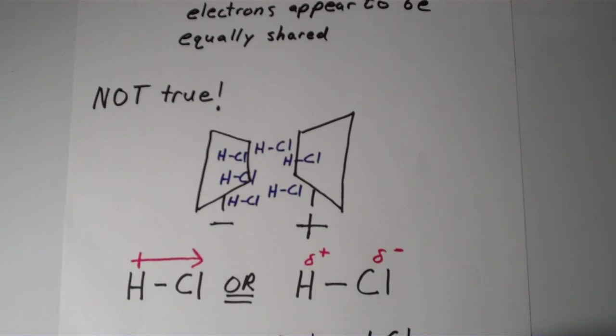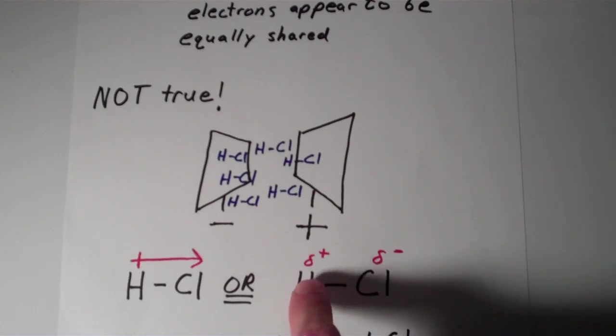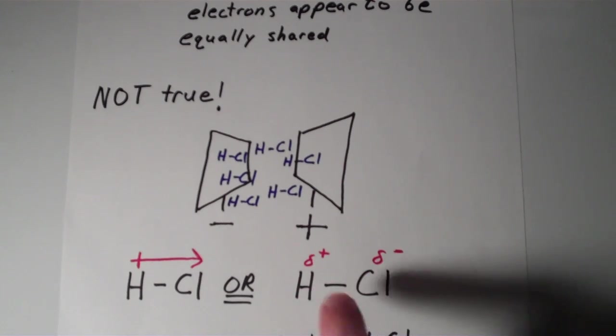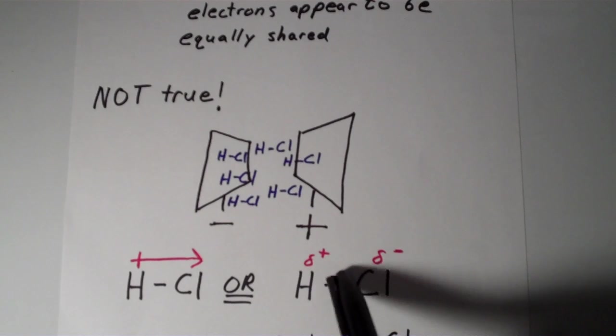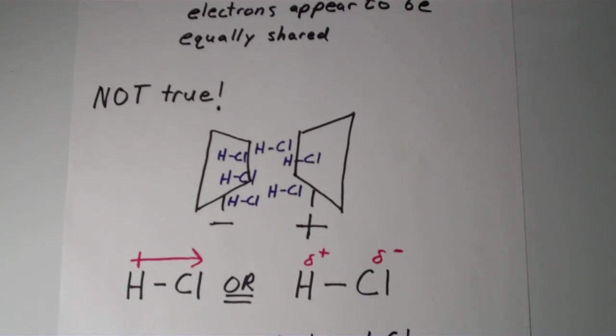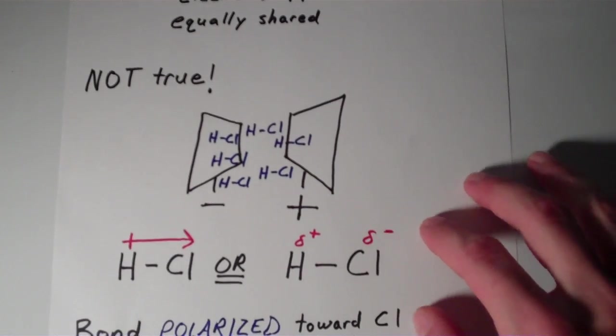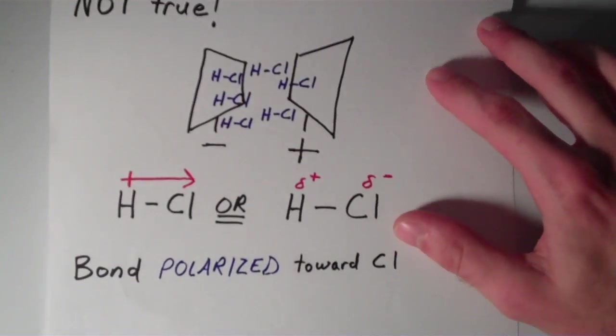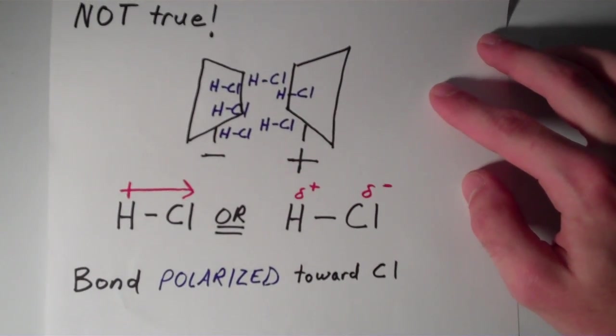You can also represent this by a lowercase delta, so delta plus, delta minus, partial positive, partial negative charges. And we say that the bond is polarized towards the chlorine atom.